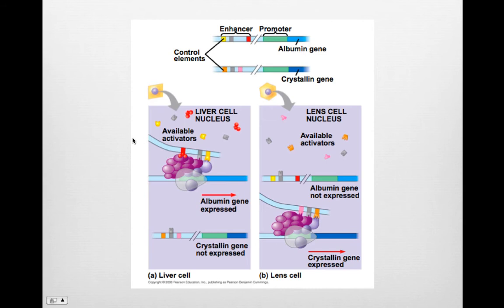Specific transcription factors that act as repressors can bind directly to the distal control elements, which are the enhancers, and block the activators. This will prevent transcription. In addition, some activators attract proteins that cause histone acetylation, starting transcription, and some repressors attract proteins that deacetylate histones, stopping transcription. There are common nucleotide sequences in most control elements. Each enhancer is made of about 10 control elements, and the combination of control elements is more important than the presence of any specific one.